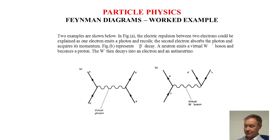So here are two examples of Feynman diagrams. In figure A on the left, this represents an electric repulsion between two electrons and could be explained as one electron emits a photon and recoils